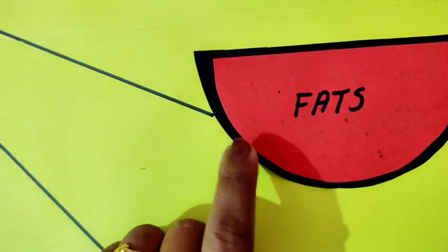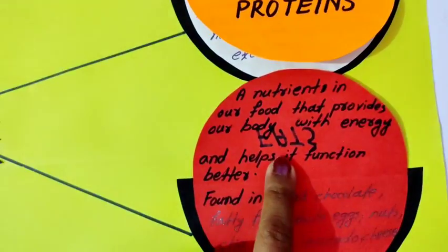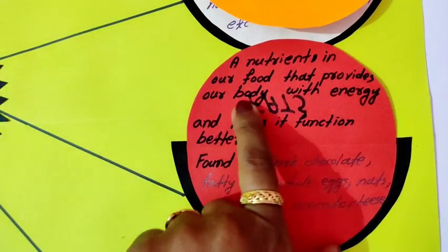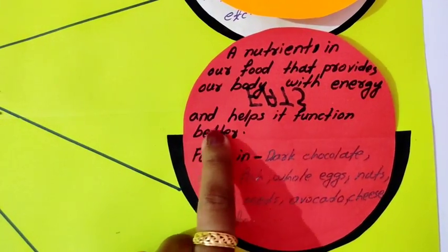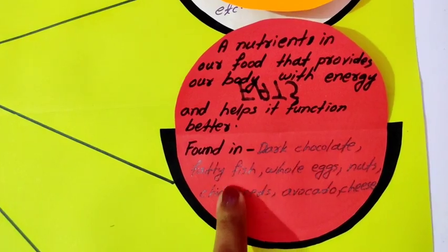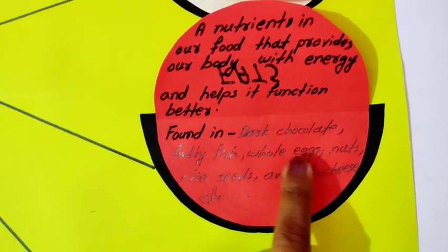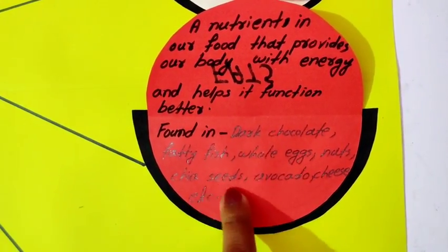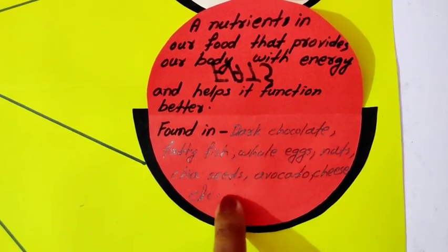Then fats. This is a nutrient in our food that provides our body with energy and helps it function better. Found in dark chocolate, fatty fish, whole eggs, nuts, chia seeds, avocado, cheese, etc.